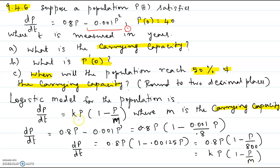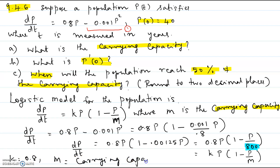We are writing dp/dt in the form kp times 1 minus p over m. In this form, the denominator of p denotes the carrying capacity. Here the denominator is 800, so 800 is the carrying capacity. Therefore k equals 0.8 and m, which is the carrying capacity, equals 800. That answers part a.